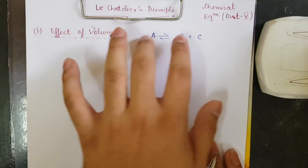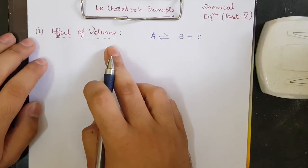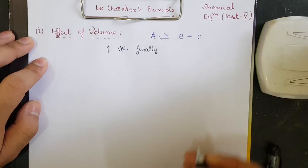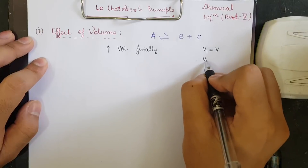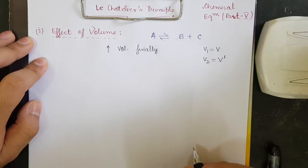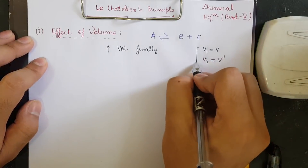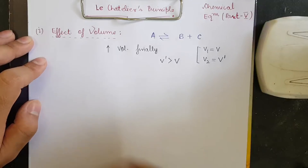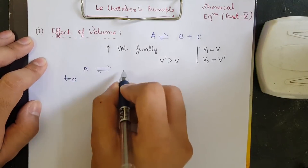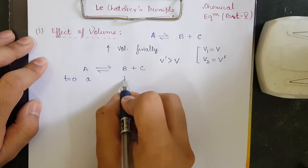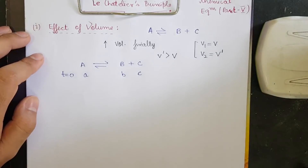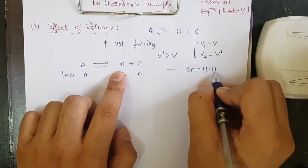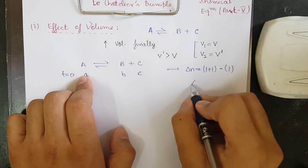Our first case is the effect of volume. We have the reaction A → B + C where everything is in the gaseous phase. The initial volume V1 = V and the final volume V2 = V', where V' is greater than V — the system has been transferred to a larger container. The delta n for this reaction is (1+1) − 1 = 1, which is greater than zero.